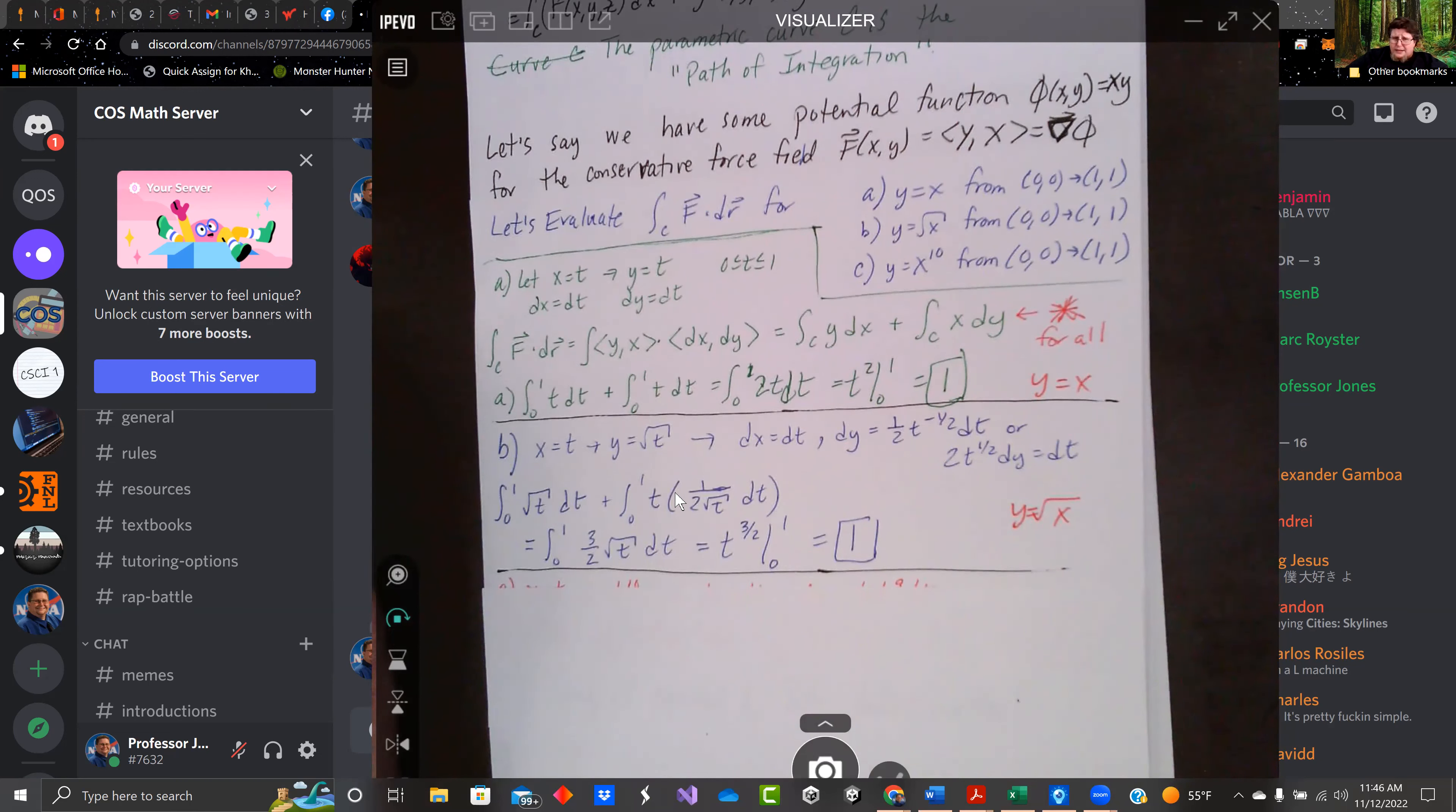This one cleans up to square root of t over two. And so we can add them together. We got square root of t plus one half square root of t. Three halves square root of t. We solve, we get two to the three halves from zero to one. We get one again.